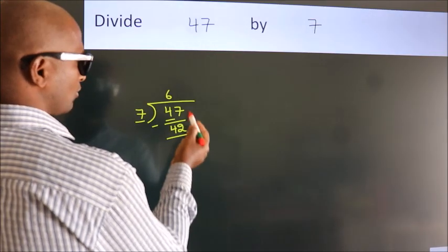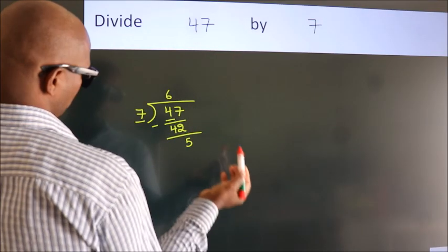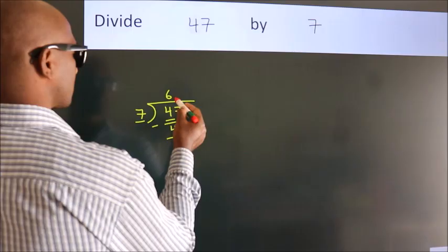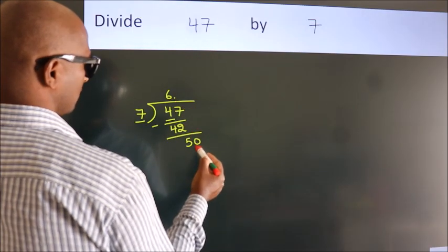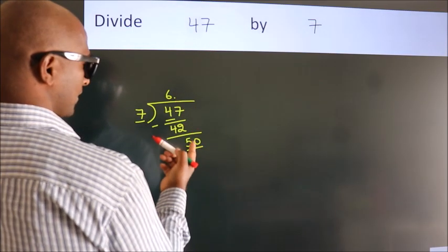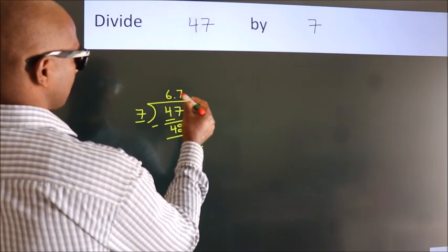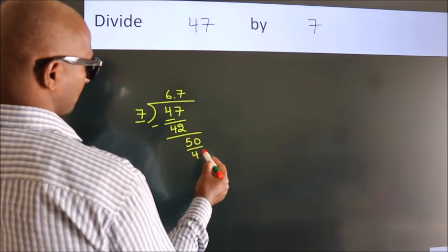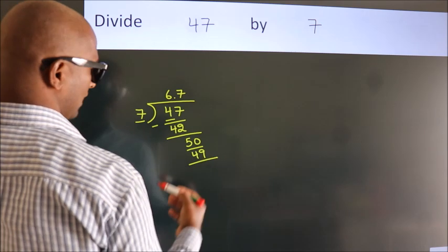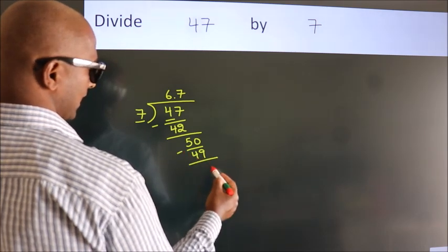After this, no more numbers to bring down. So what we do is put a dot and take 0. So 50. A number close to 50 in the 7 table is 7 times 7, which is 49. Now we subtract. We get 1.